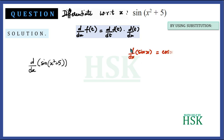We know that d/dx of sin(x) equals cos(x). However, we cannot directly write the derivative of sin(x² + 5) as cos(x² + 5), because we are differentiating a composite function.